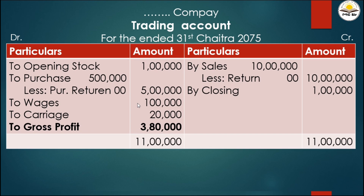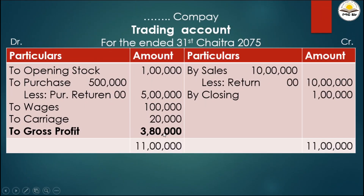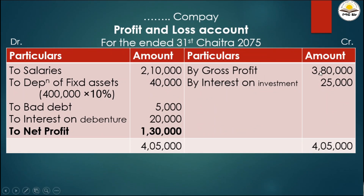Now preparing the Profit and Loss Account for the year ended 31st March 2075. On the credit side, gross profit brought down from the trading account is 3 lakh 80 thousand. On the debit side we post all expenses: salaries 2 lakh 10,000, and depreciation on fixed assets from additional information at 10%.